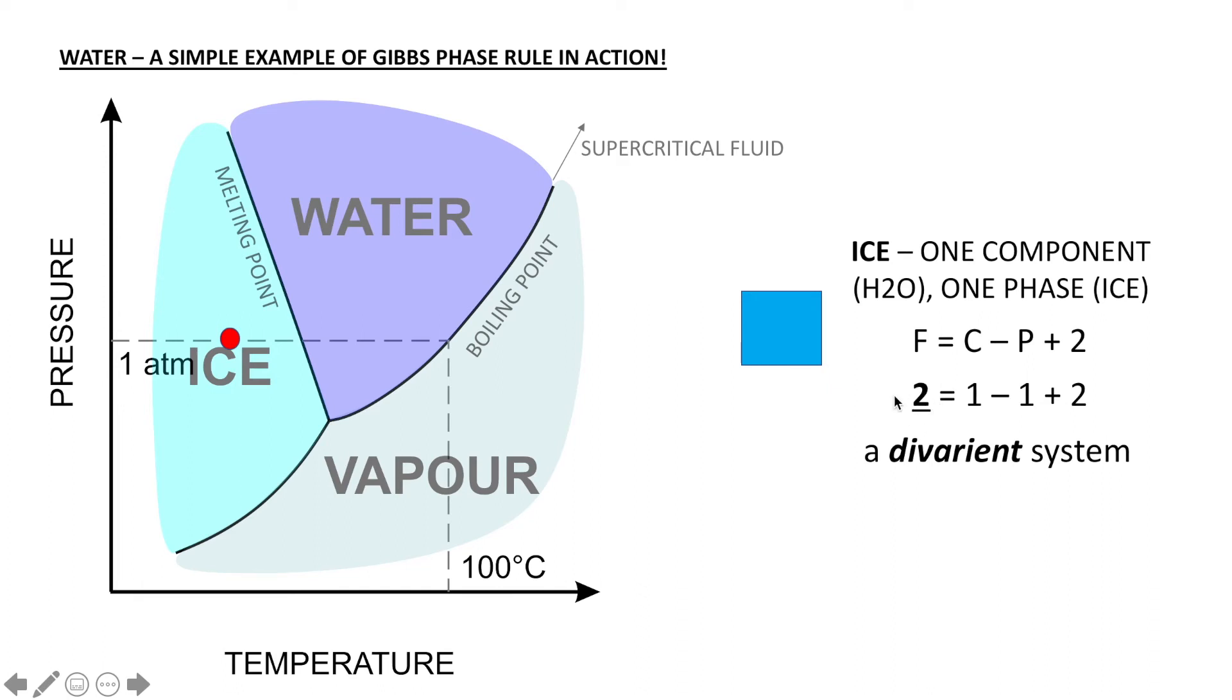That means we need to define two intensive variables to know where that dot is located on this phase diagram. This is also known as a divariant system. For example, if we have one atmospheric pressure in the ice field, it can exist at any of these temperatures. So we would need to define both pressure and temperature to know the state of the system.